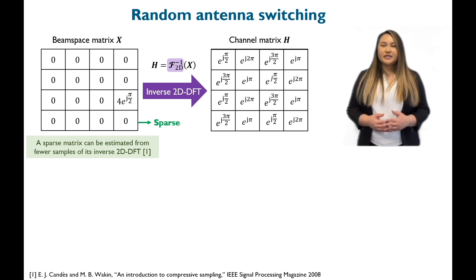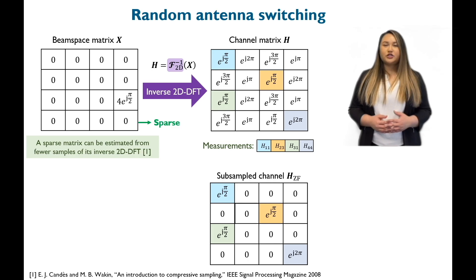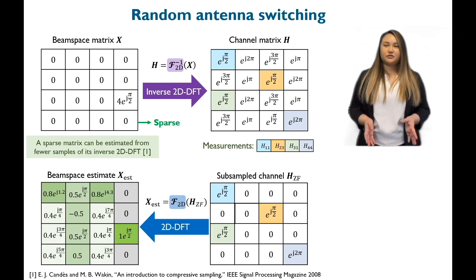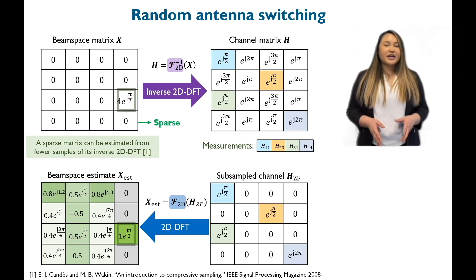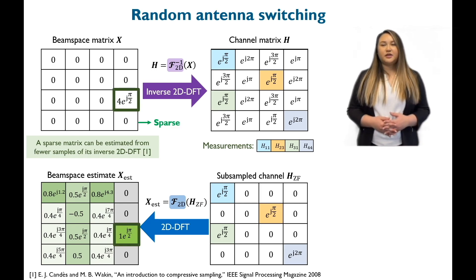Consider a random subsampling technique that acquires just four entries in H. A coarse beam space estimate is simply the Fourier transform of the subsample channel. An interesting observation is that the beam space estimate and the original beam space achieve a maximum at the exact same coordinate. This coordinate corresponds to the best beam.